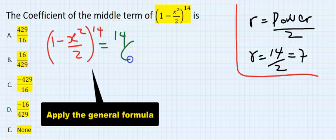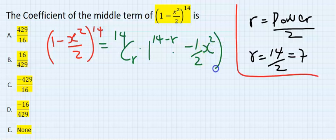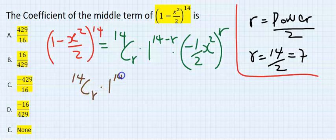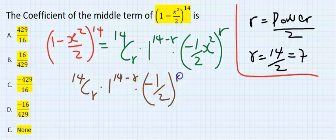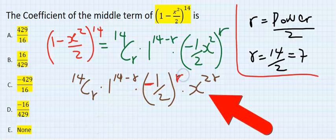And you have 14Cr times 1 to the power of (14 - r) times (you can make it -½x²) all to the power of r. This is 14Cr times 1 to the power of (14 - r) times (-½) to the power of r, and x to the power of 2r. I give the negative to the constant and leave the coefficient free.